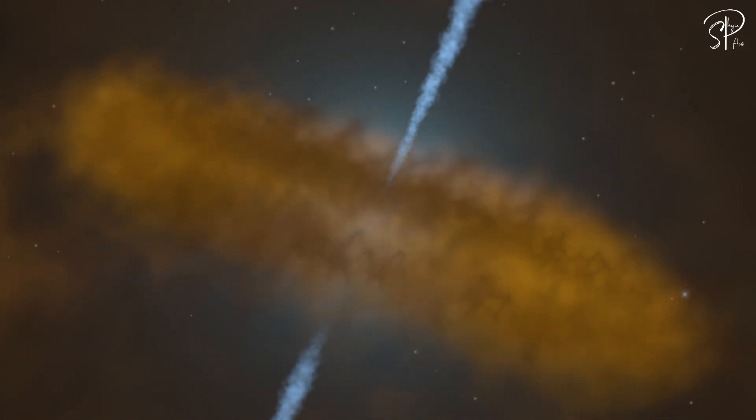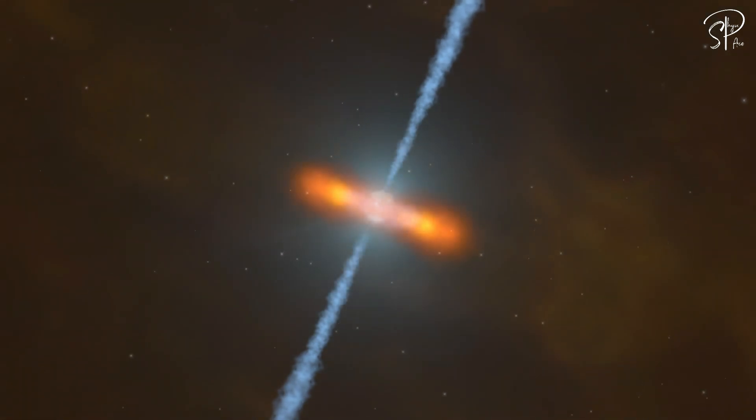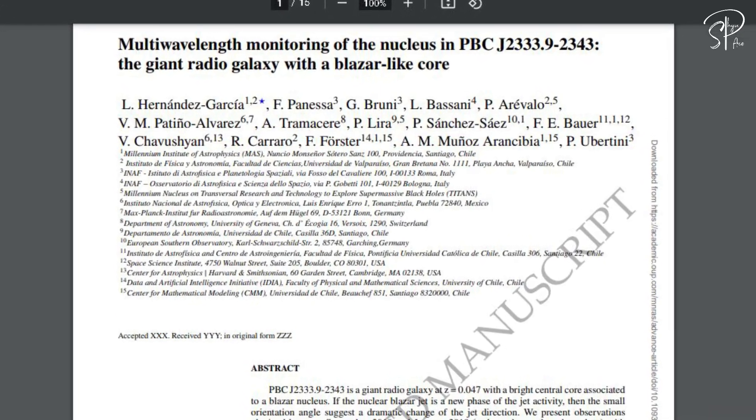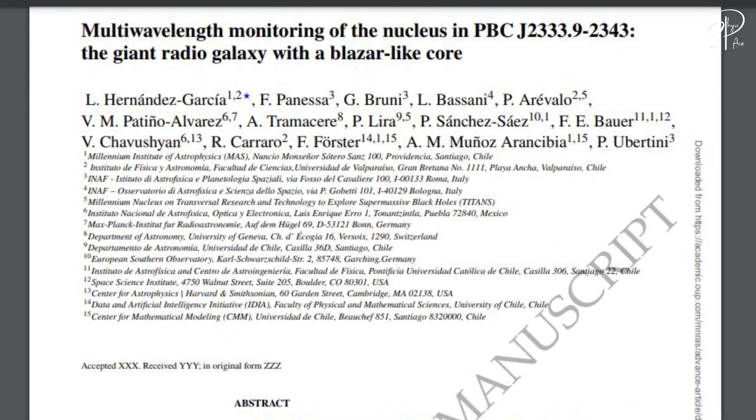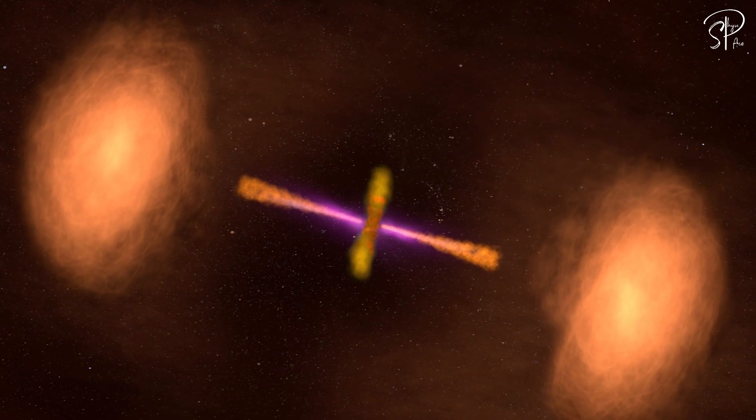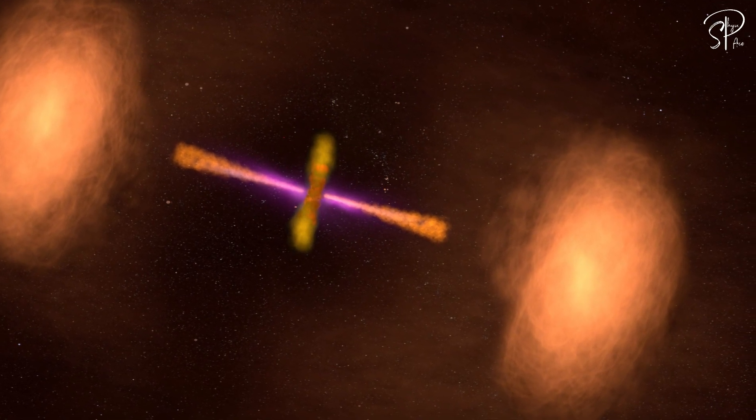Although astronomers have been studying AGN jets for decades, the discovery of a black hole's jet changing its direction has left them astonished. An international team of astronomers recently made this groundbreaking discovery: a galaxy with a jet that has altered its direction.